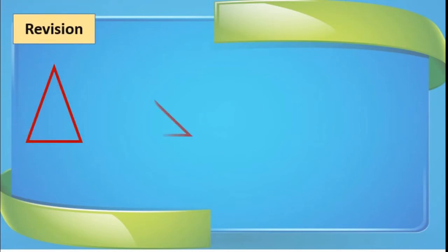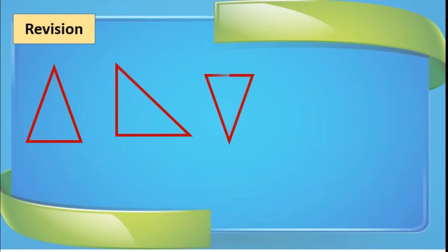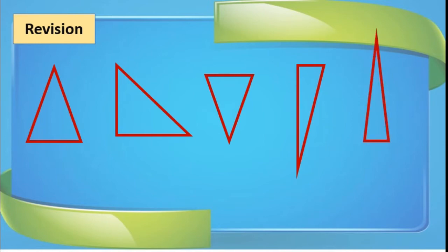Observe this carefully. Again we can see different figures and one similarity is there among them. Again we will count the sides or edges. This one has 1, 2, and 3 sides. One more figure — 1, 2, and 3. This also has 3 sides. So again this is a closed figure.